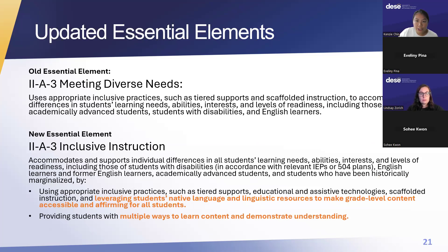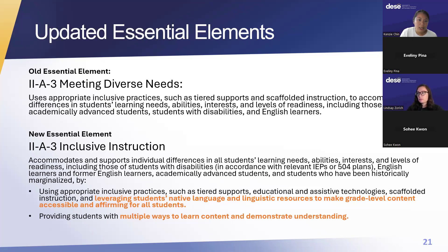This essential element had a change in what the actual essential element was. The old essential element was meeting diverse needs, which is now being replaced by inclusive instruction. Inclusive instruction reads: accommodates and supports individual differences in all students' learning needs, abilities, interests, and levels of readiness, including those of students with disabilities in accordance with relevant IEPs or 504 plans, English learners and former English learners, academically advanced students, and students who have been historically marginalized—by using appropriate inclusive practices such as tiered supports, educational and assistive technologies, scaffolded instruction, and leveraging students' native language and linguistic resources to make grade-level content accessible and affirming for all students, and providing students with multiple ways to learn content and demonstrate understanding.